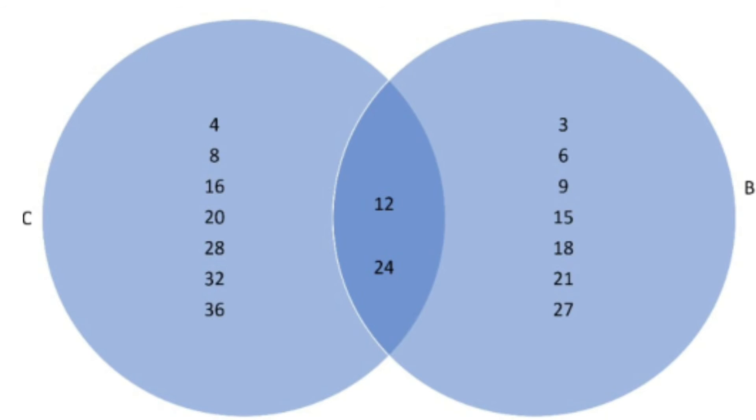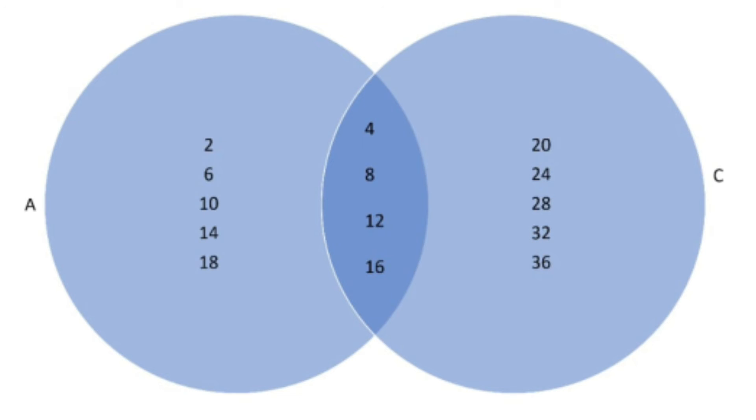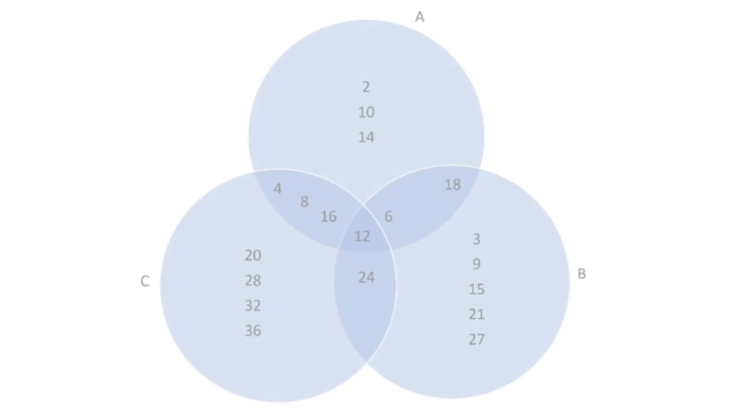Observe the Venn diagrams and calculate A union B, A union C, B union C, and so on.